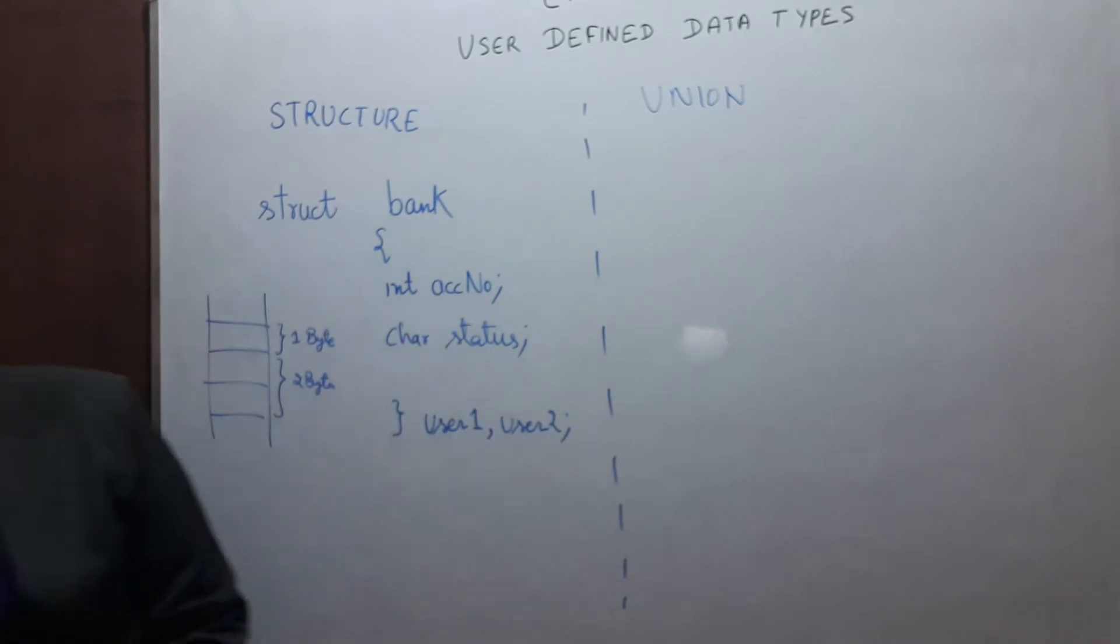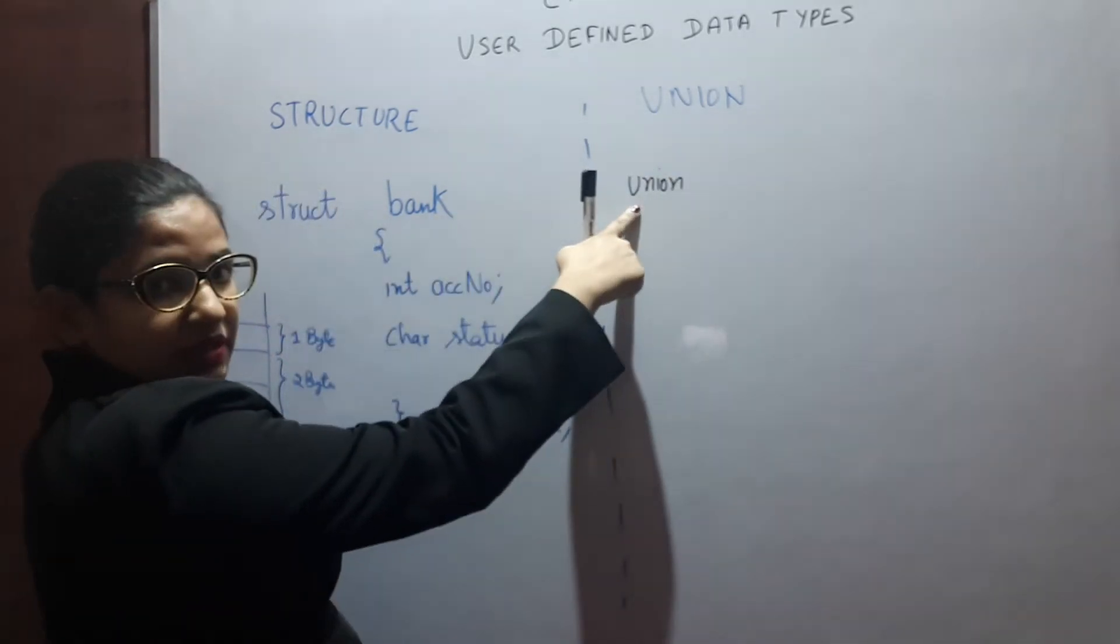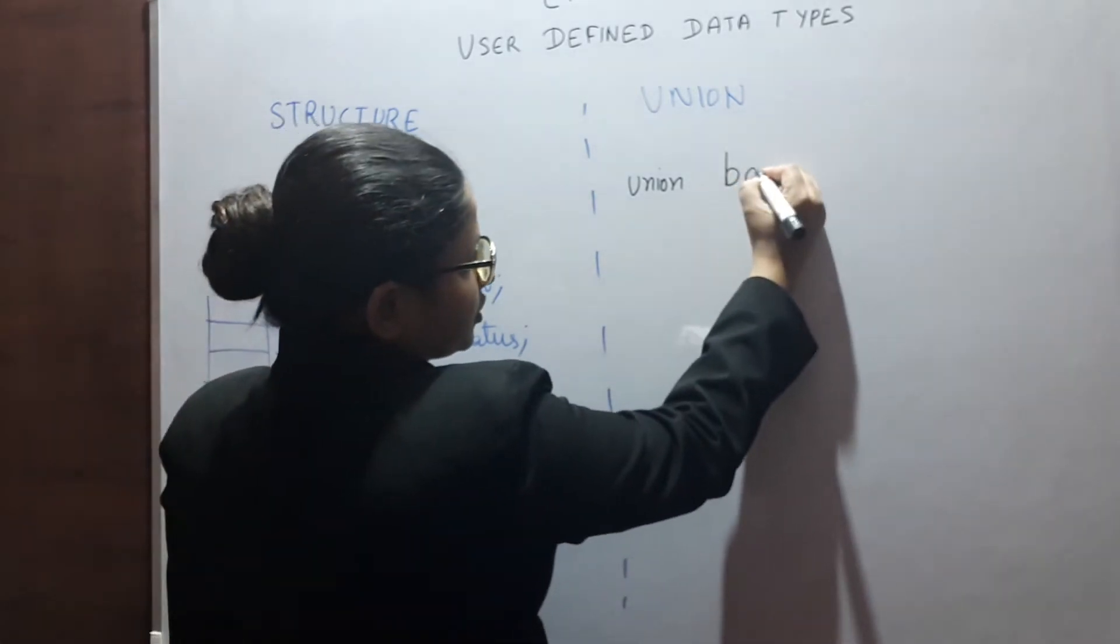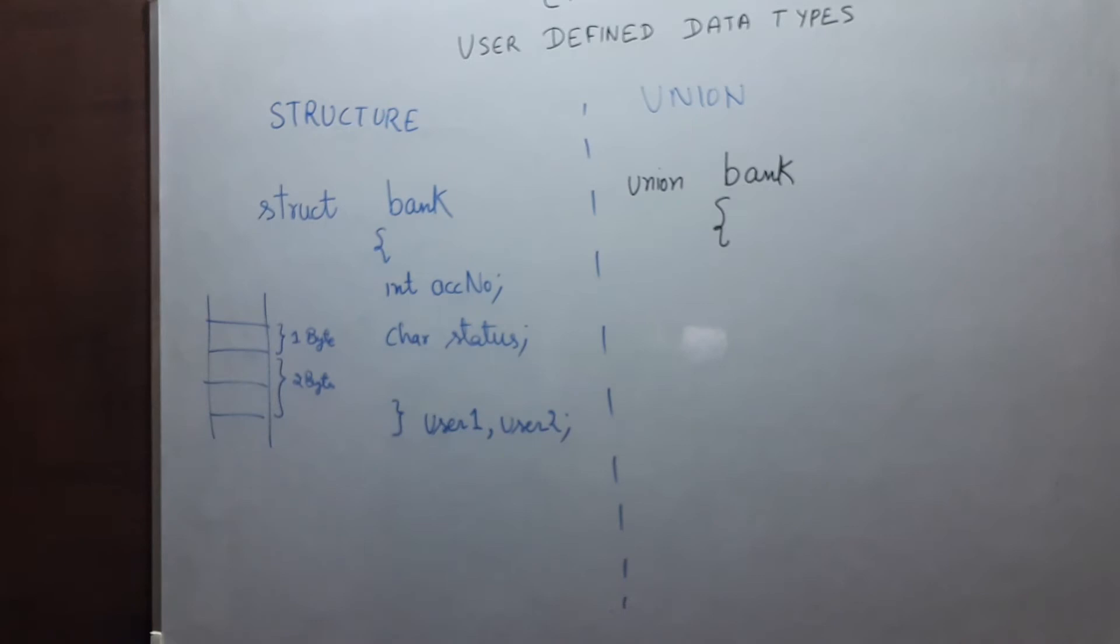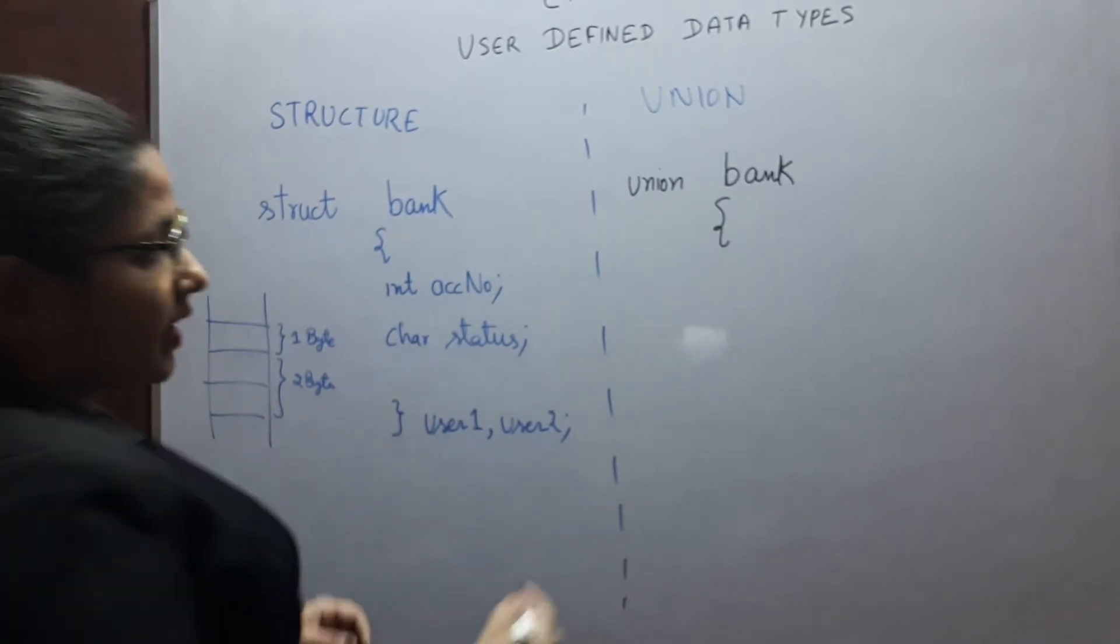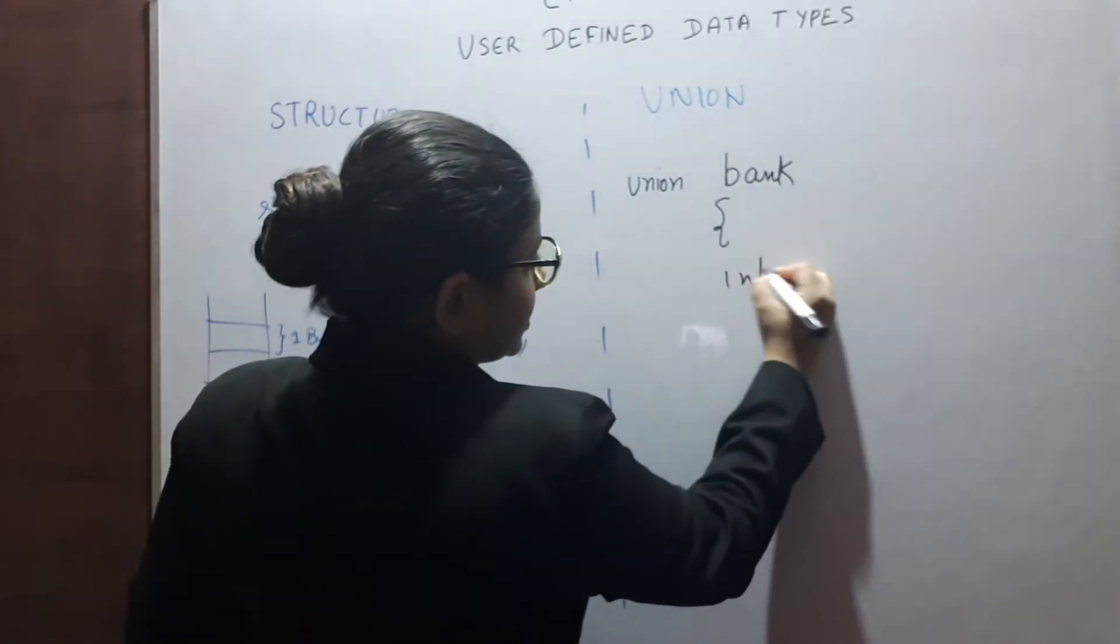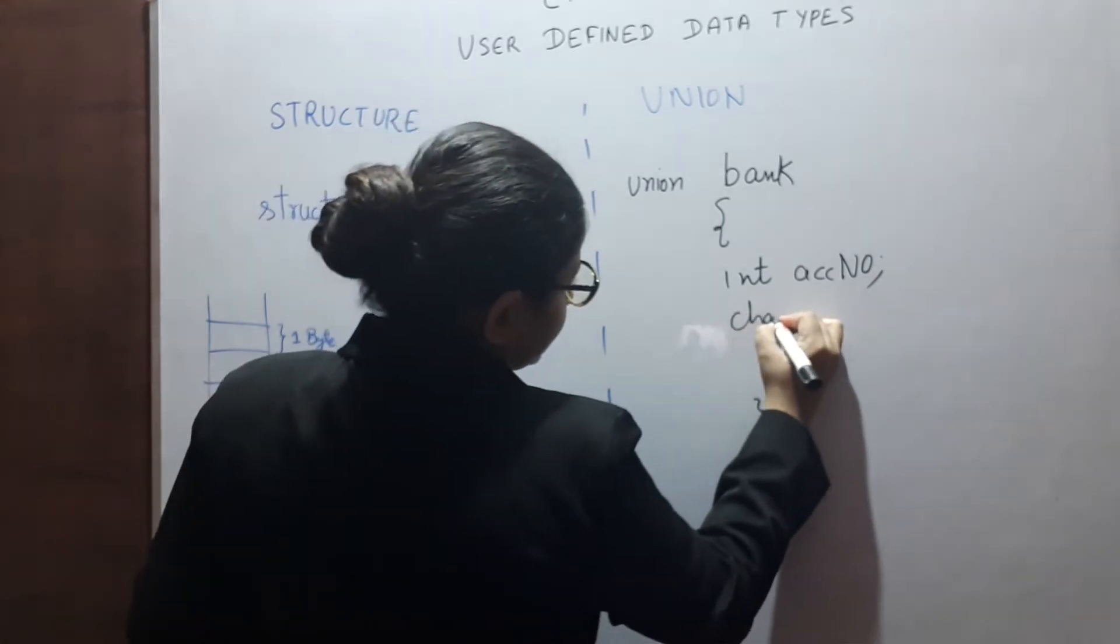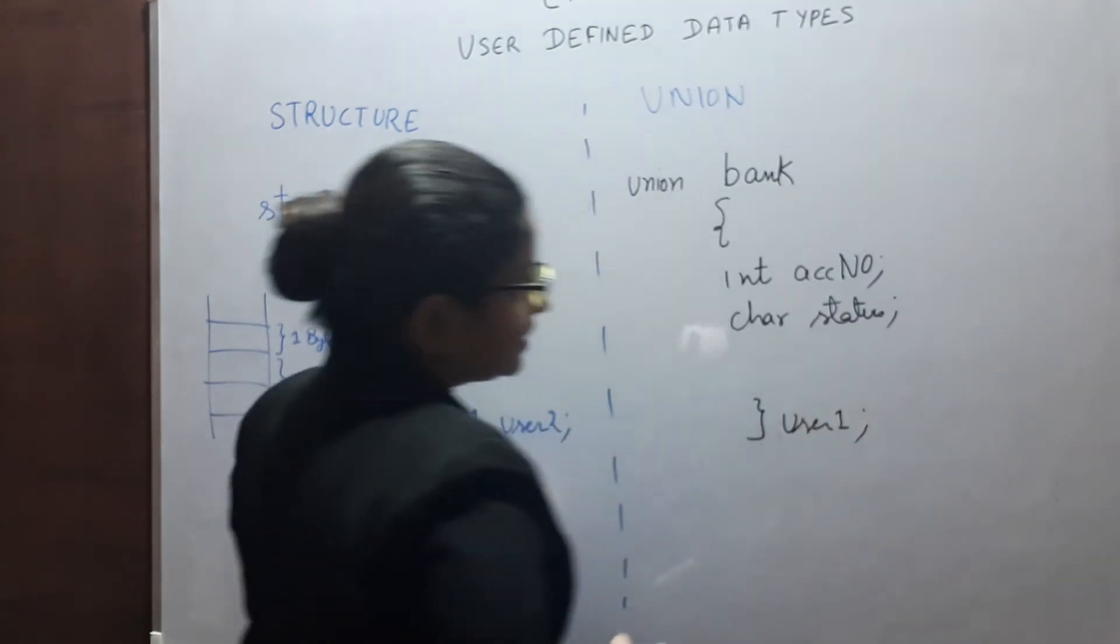In union, its declaration and use is similar to one of the structures where its functionality is totally different. We can have union, same to same. Only the keyword is different, union. Bank is the name of union. Curly bracket opening, curly bracket closing and a semicolon. Here again, we are having int account number, char status and you can have here before semicolon, user1.